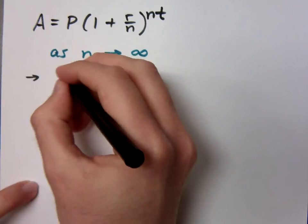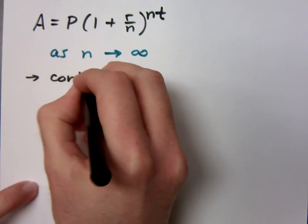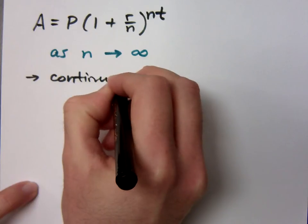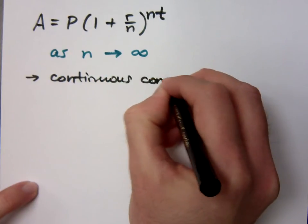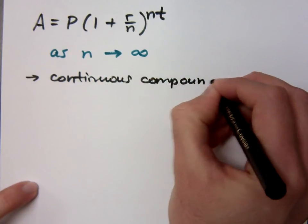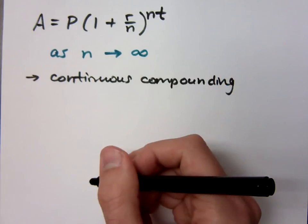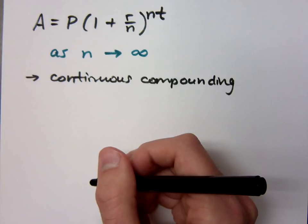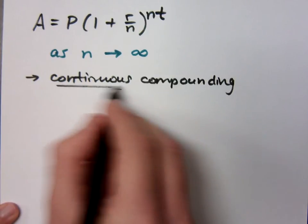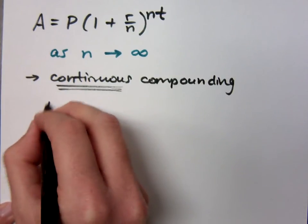Then we end up with something called continuous compounding. Because if you increase the number of compoundings until it kind of blurs and it's continuous, you're always increasing, that's called continuous. And so the formula looks like this.